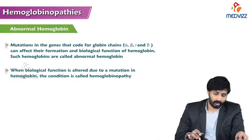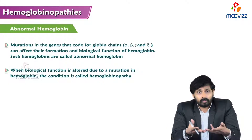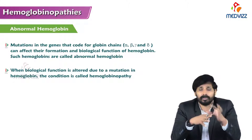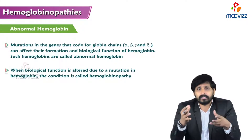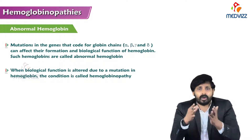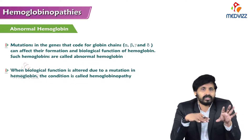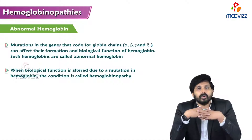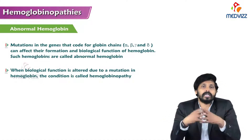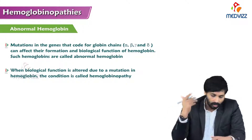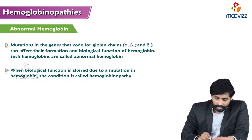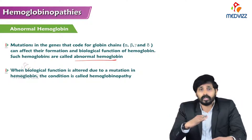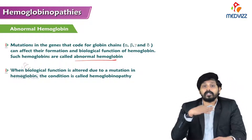Abnormal hemoglobin results from mutations in genes that code for globin chains. Globin chains are proteins synthesized via protein synthesis: DNA to RNA, RNA to protein. If there are mutations in the gene, defective mRNA codes for defective protein. These mutations lead to abnormal changes in globin chains, leading to abnormal hemoglobin production. When the biological function of hemoglobin is altered due to such mutations, that condition is known as hemoglobinopathy.